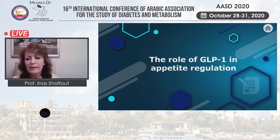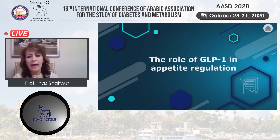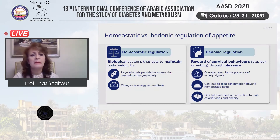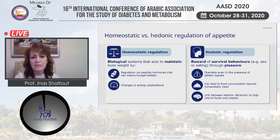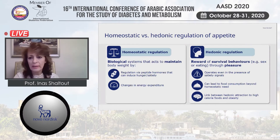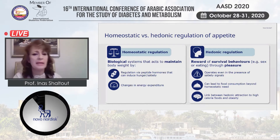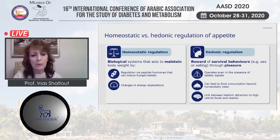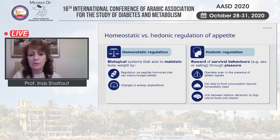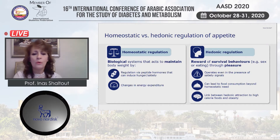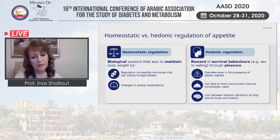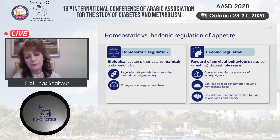What is the role of GLP-1 in appetite regulation? We know that we have an endogenous GLP-1, and there is homeostatic versus hedonic regulation of appetite. The homeostatic regulation acts to maintain body weight through regulation by peptide hormones that can induce hunger or satiety, and of course there are changes in energy expenditure according to lifestyle, whether physical work or sedentary.